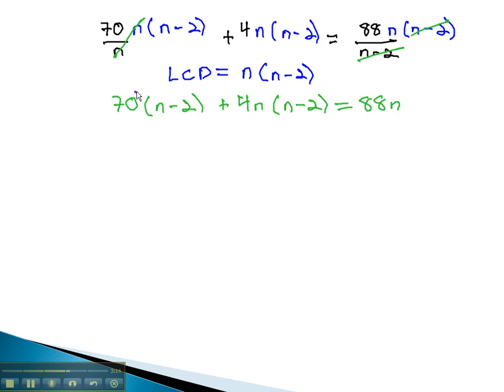Next, we can distribute through the parentheses, which will give us 70n minus 140 plus 4n squared minus 8n equals 88n.